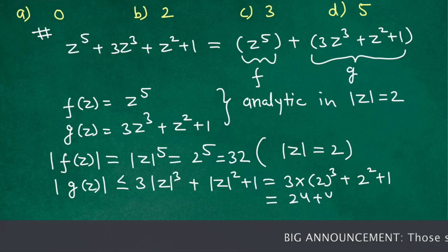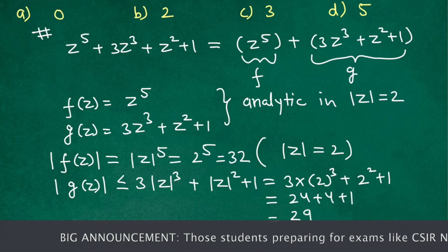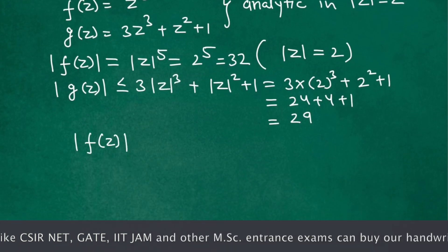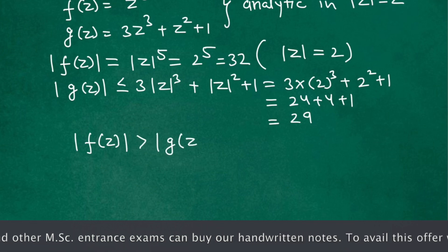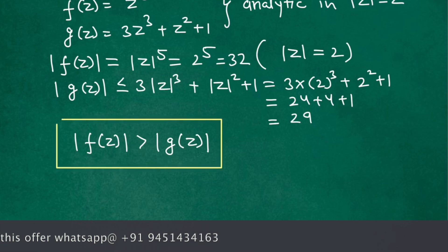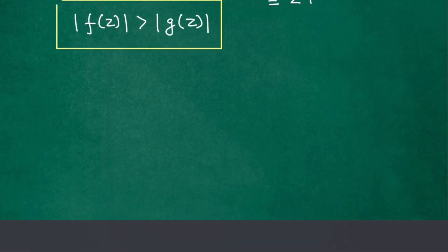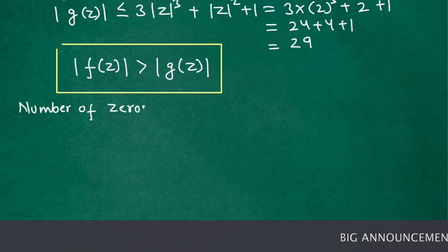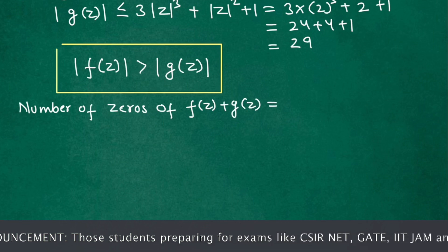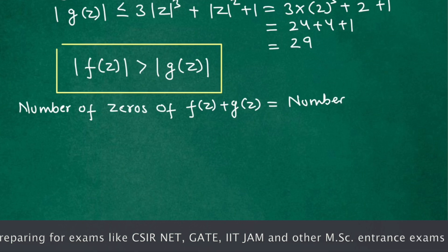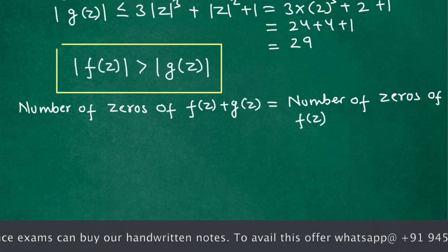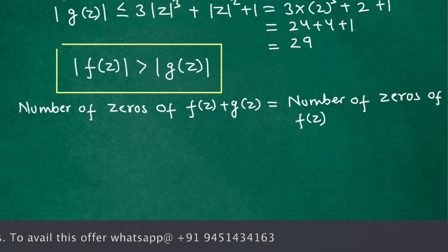Simplifying: 24 + 4 + 1 = 29. So |f(z)| = 32 is greater than |g(z)| ≤ 29 on C. The third condition of Rouché's theorem is satisfied. Therefore, from Rouché's theorem, the number of zeros of f(z) + g(z) equals the number of zeros of f(z) inside C.